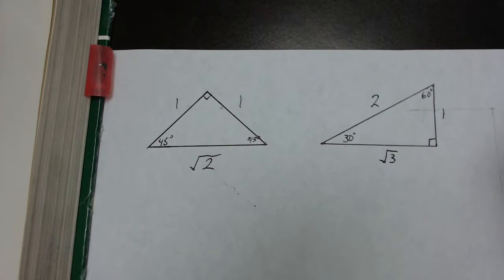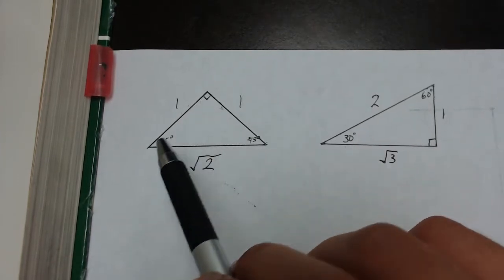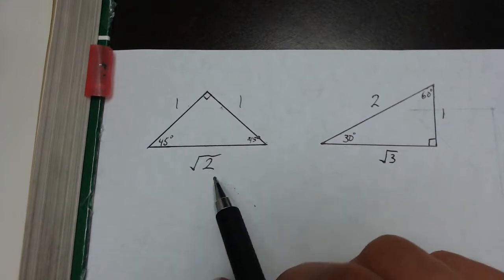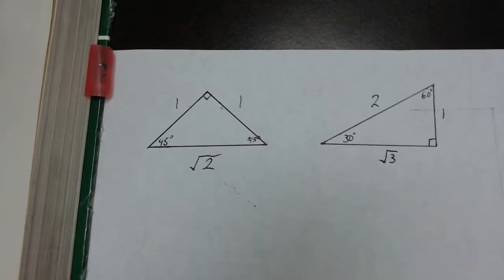You need to memorize these triangles, and we've got to know how to construct them. So the easiest way to construct a 45-45-90 is to draw an isosceles triangle. Make the equal sides 1, and then the hypotenuse is square root of 2, then fill in the 45 and the 45.